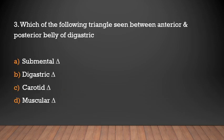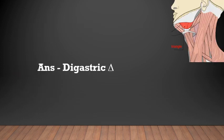Which of the following triangles is seen between the anterior and posterior belly of the digastric? Options: submental triangle, digastric triangle, carotid triangle, or muscular triangle. The answer is: digastric triangle.